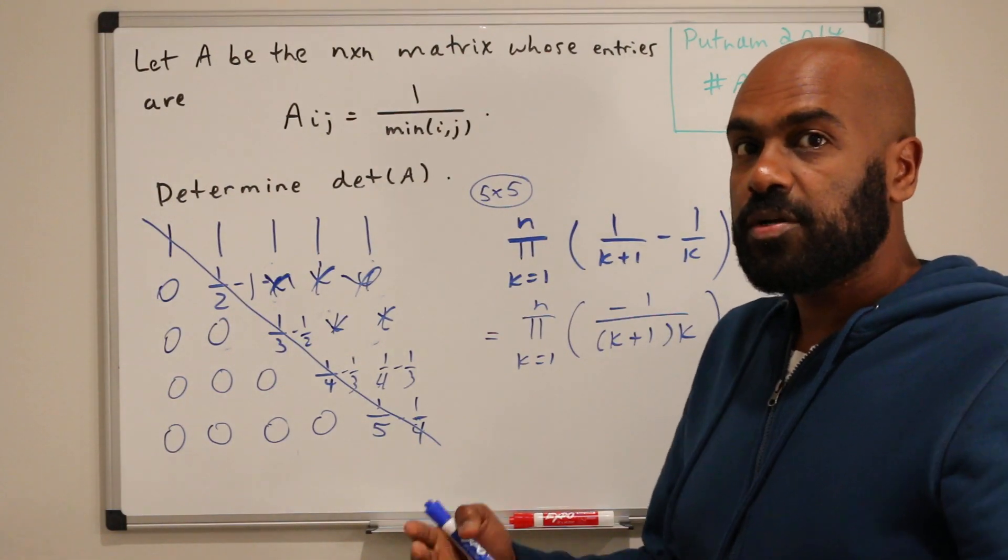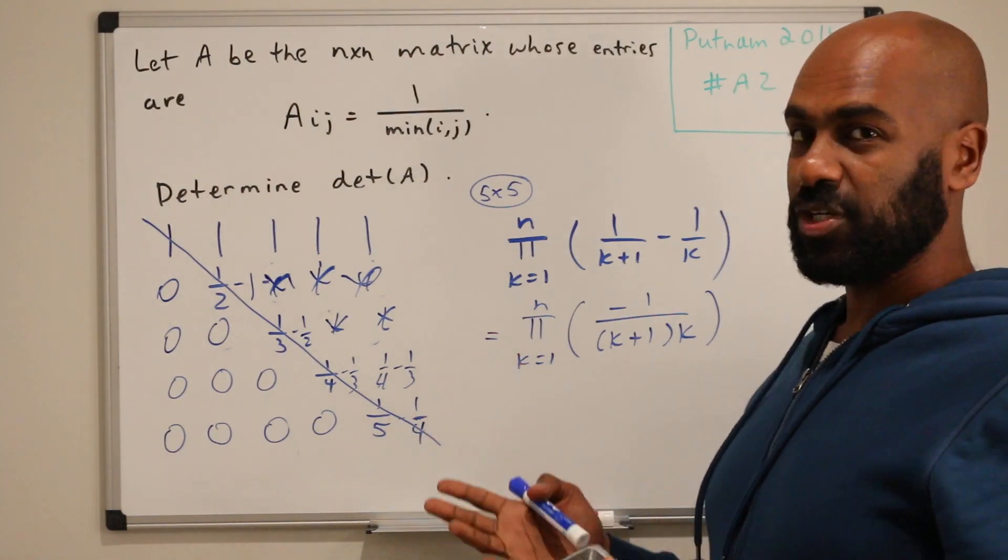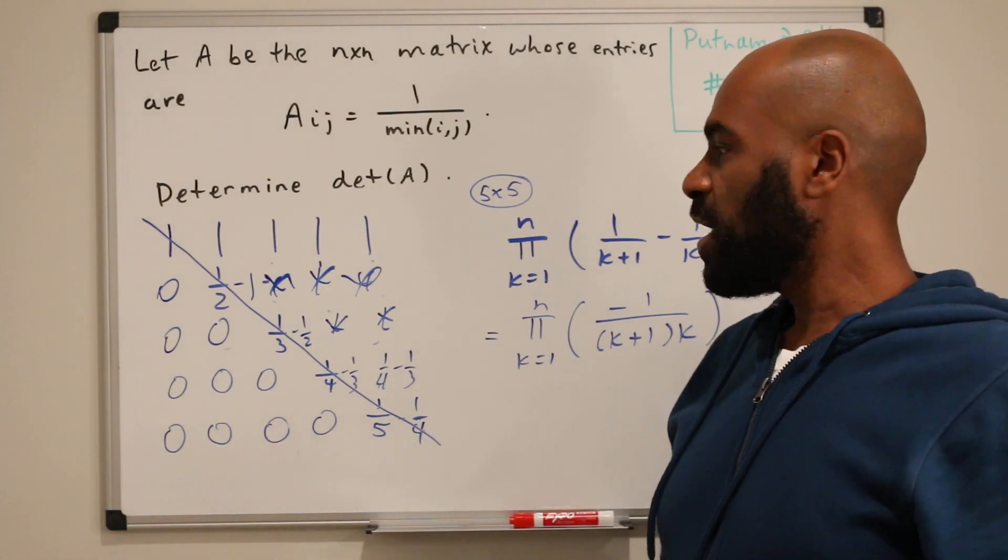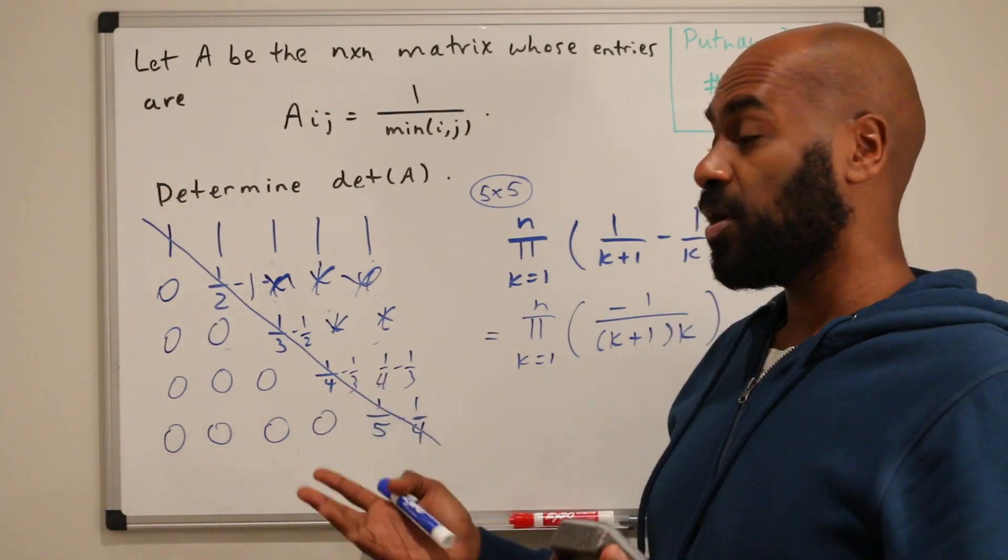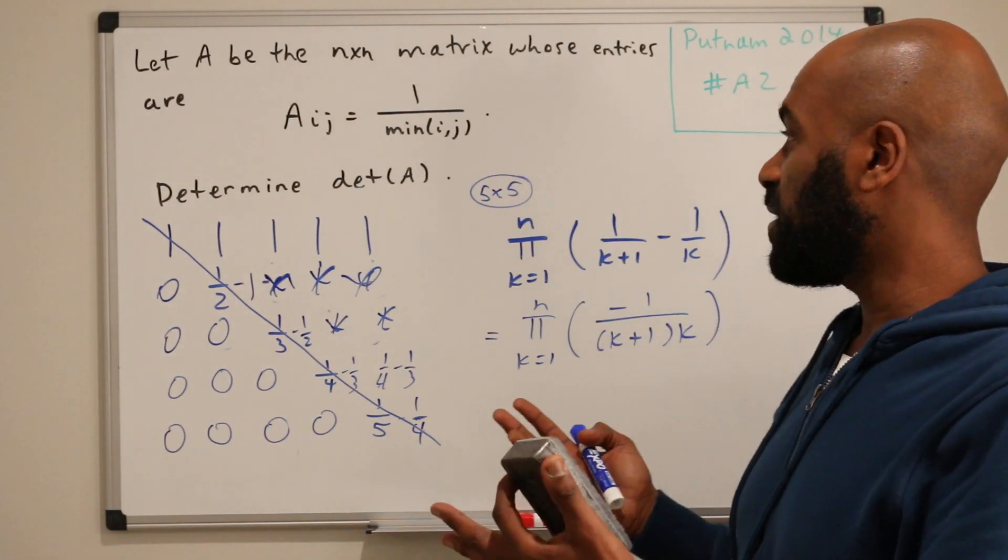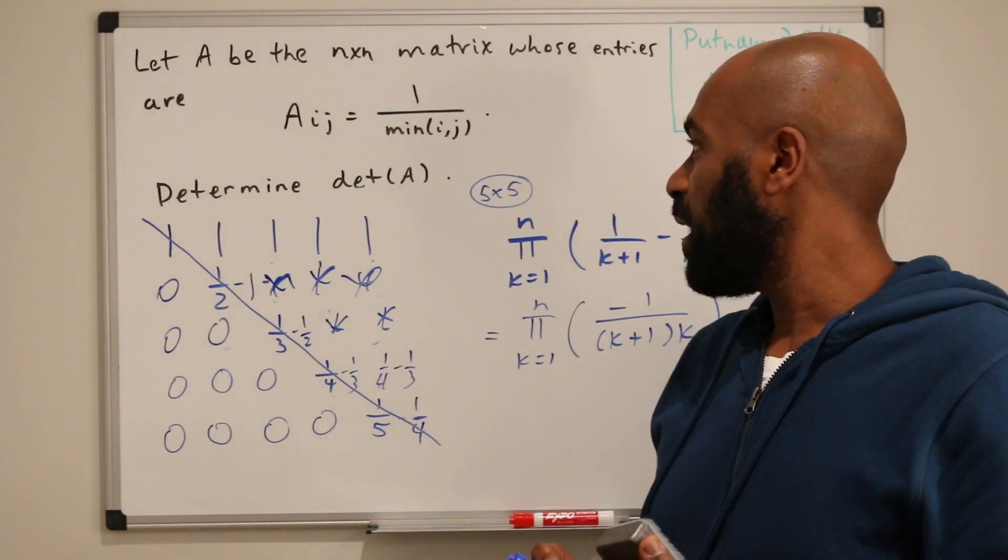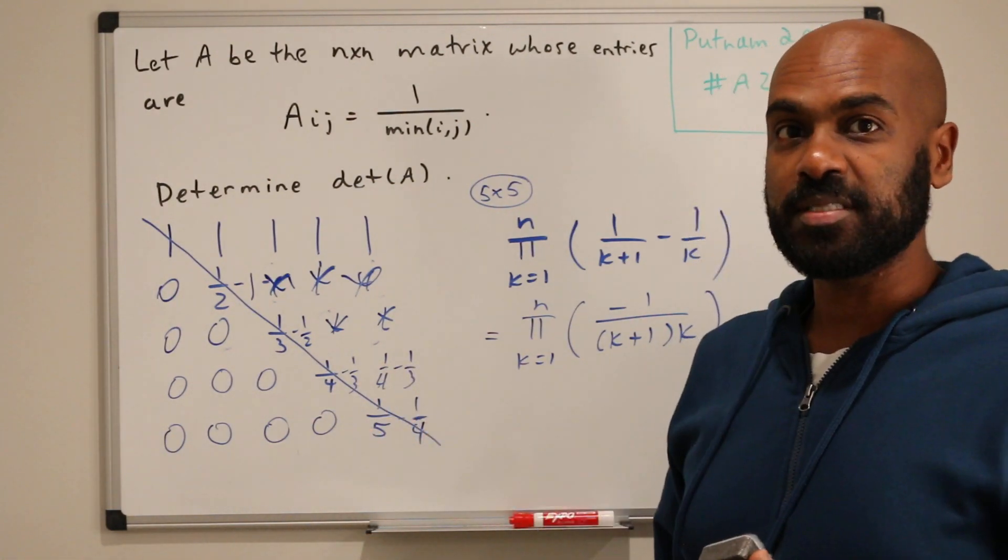So the moral of the story here is that first you see this matrix that looks kind of strange, but using row operations or maybe column operations is a good way to simplify things in order to determine what the determinant is.